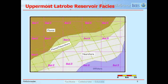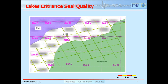The Latrobe is the main reservoir. In the northwest it's a fluvial depositional environment with fluvial sands, transitioning to near shore and then offshore. The Lake Entrance formation is the seal sitting on top of the reservoir, with sealing quality ranging from fair-to-good up to excellent in the green areas.